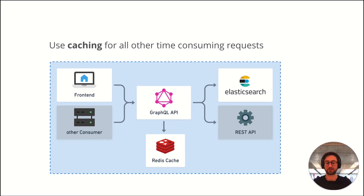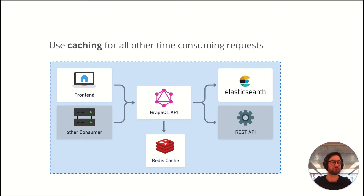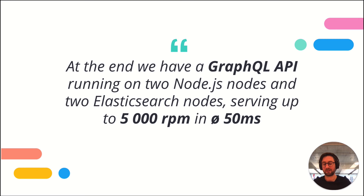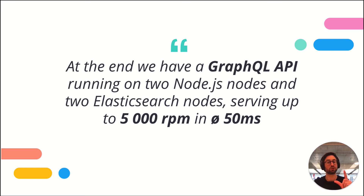For all other time-consuming requests where denormalization is not possible, we used Redis as a caching layer — for example for third-party APIs which are not under our control, but are still served by the same GraphQL API. With these improvements, we were able to provide a highly scalable API and search setup, which can serve up to 5000 requests per minute, each in less than 50 milliseconds, and that with just two nodes.